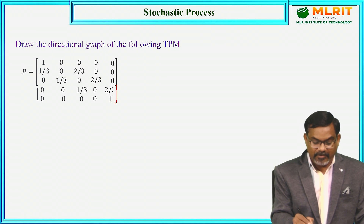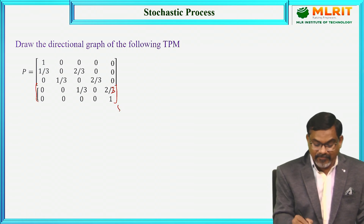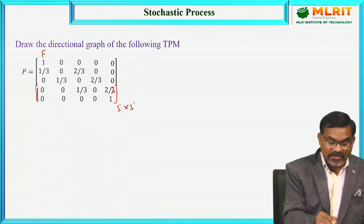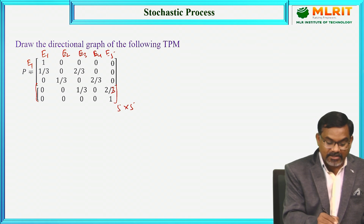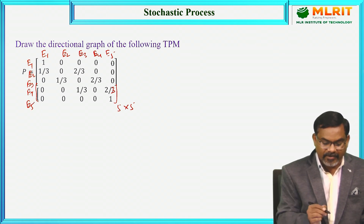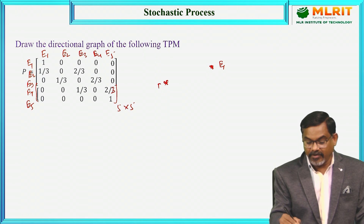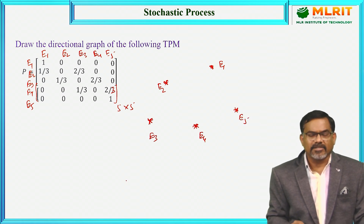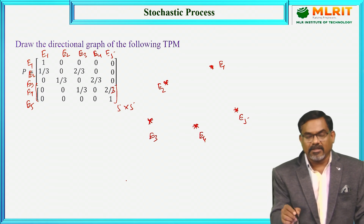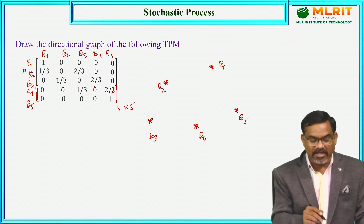There is another example: draw the directional graph of the following transition probability matrix. Here a 5 by 5 matrix is given, meaning 5 states: e1, e2, e3, e4, and e5 — similarly row-wise e1, e2, e3, e4, e5. Let us denote these states e1, e2, e3, e4, and e5 in the graph. Now let us draw the directional graph, which is also known as the transition diagram. All non-zero elements denote that there is a path from one state to another state; if 0 is there, there is no path.